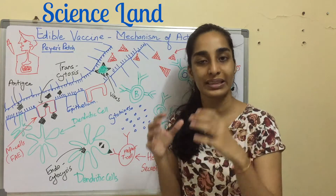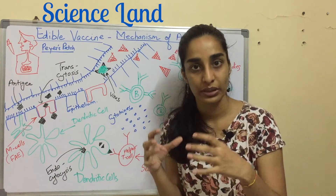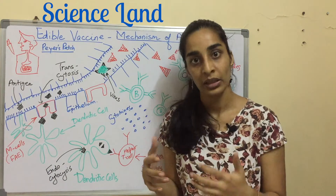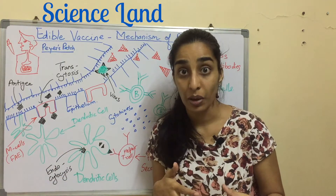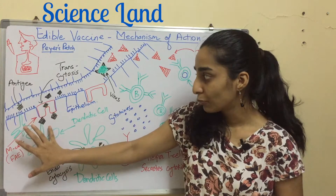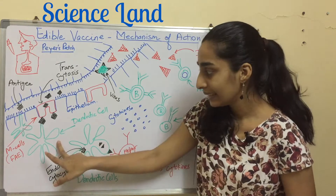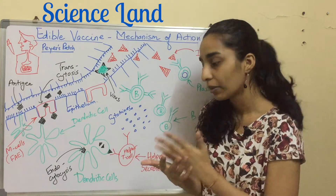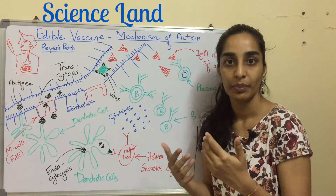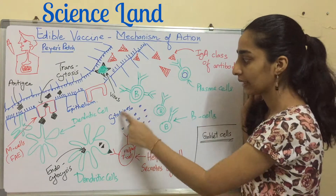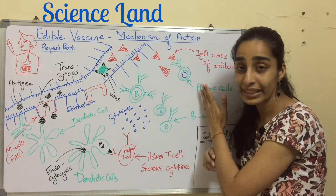The antigen is captured by a cell known as the M cell — micro-fold cell. These are also called follicular-associated enterocytes (FAE), special cells that are highly efficient at trans-cytosing certain macromolecules — that is, transporting macromolecules through the cell membrane. The M cell captures the antigen and displays it to antigen-presenting cells like dendritic cells. These dendritic cells endocytose the antigen, break it down, and display it to helper T cells.